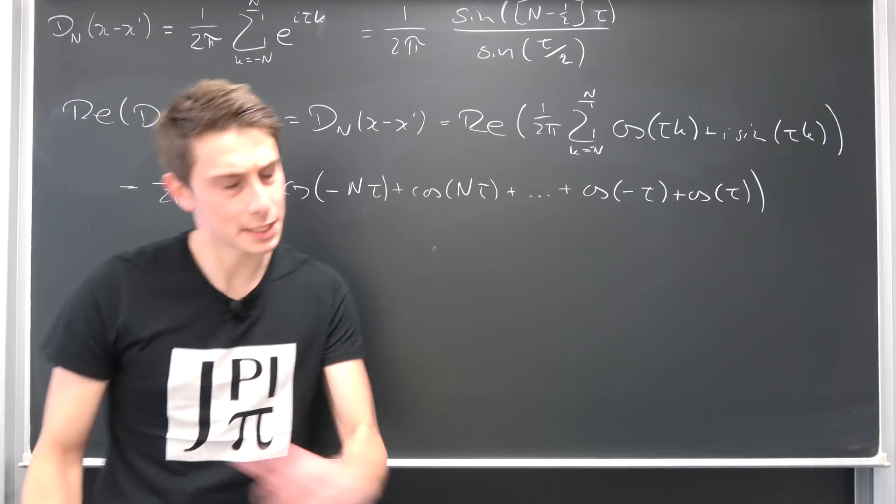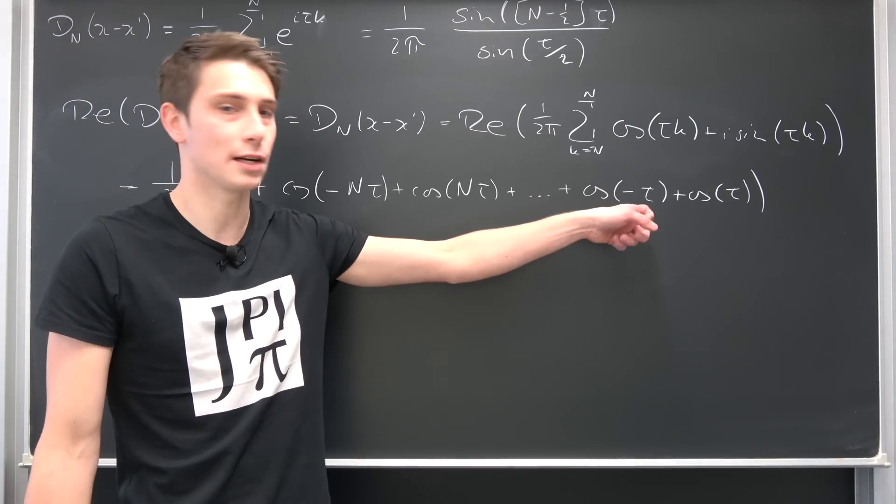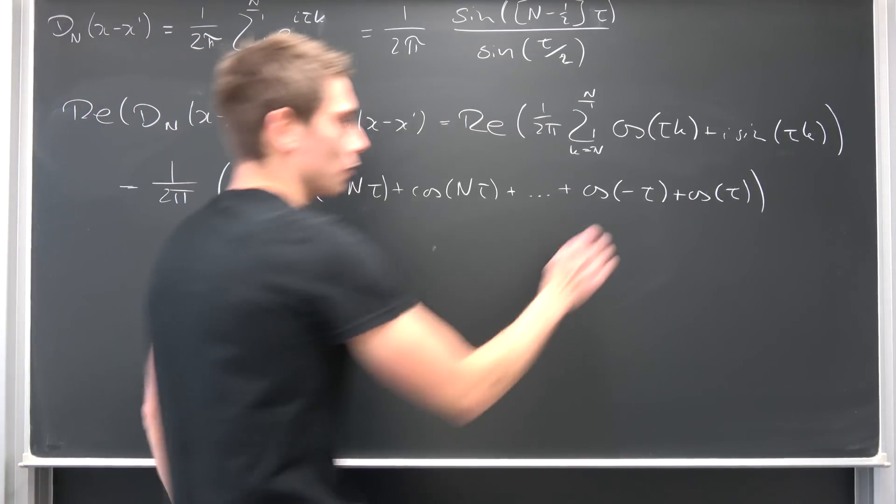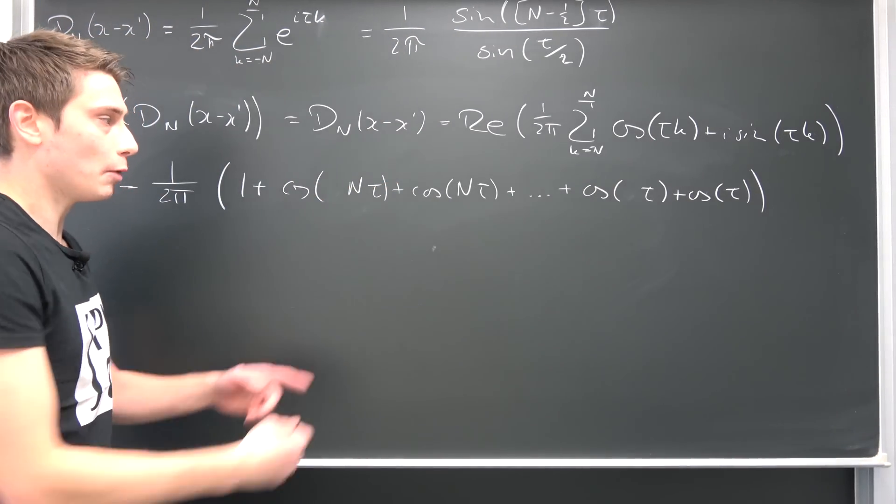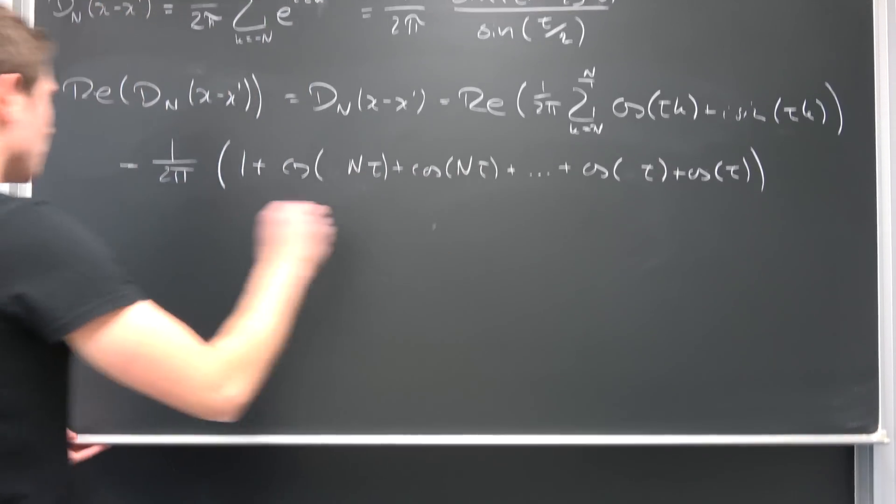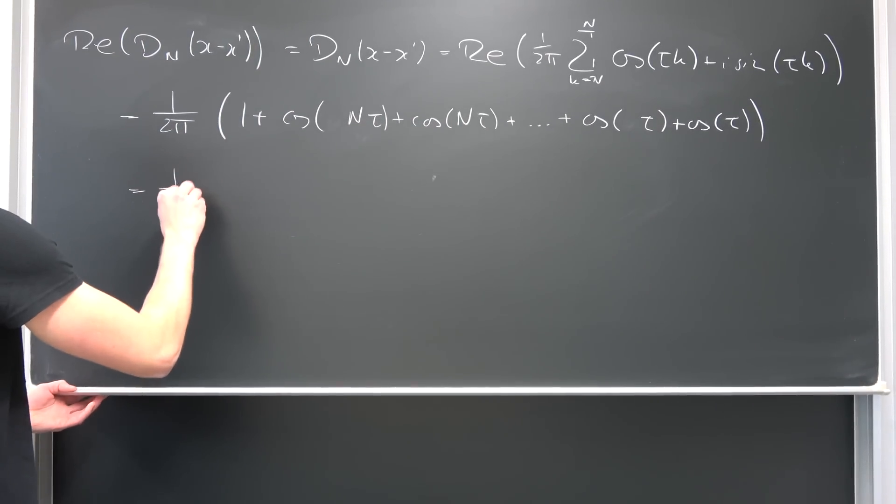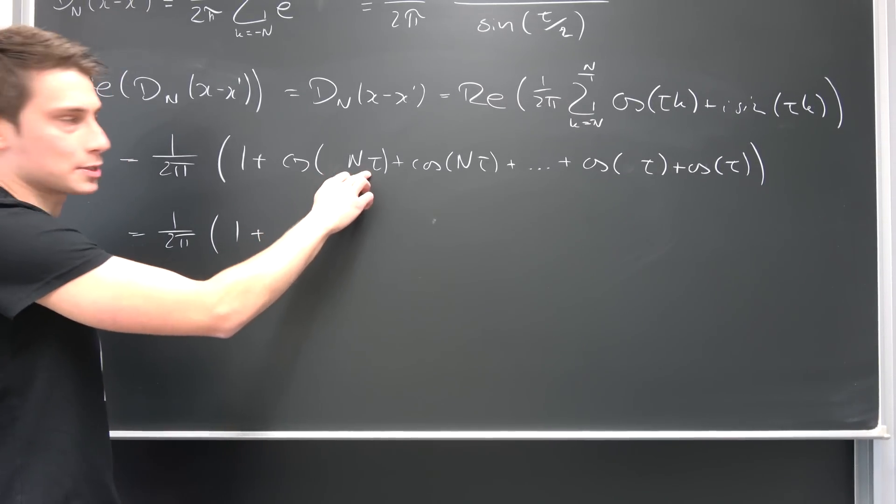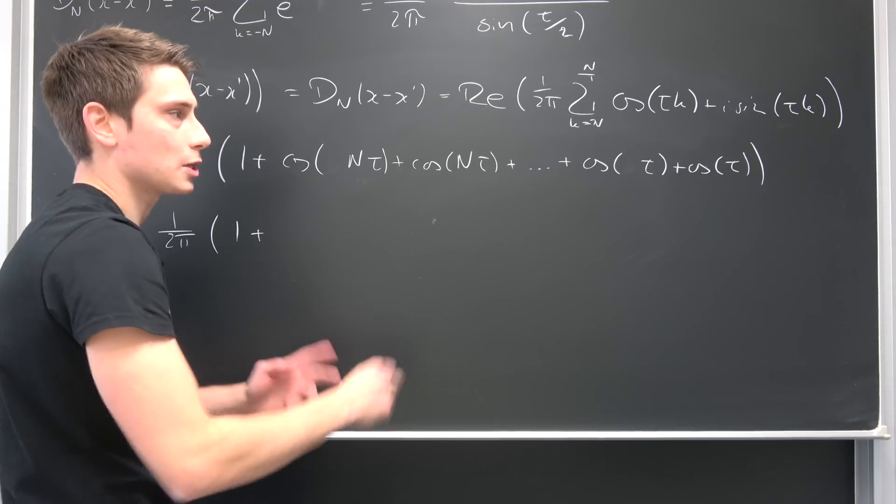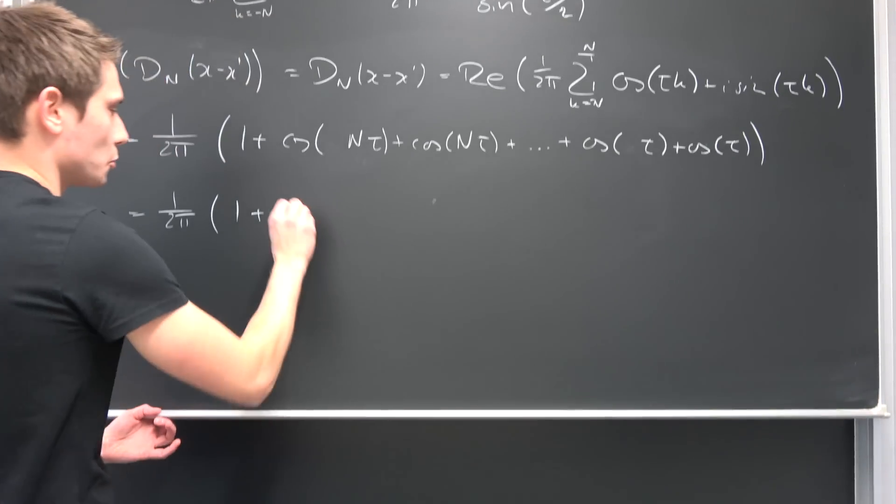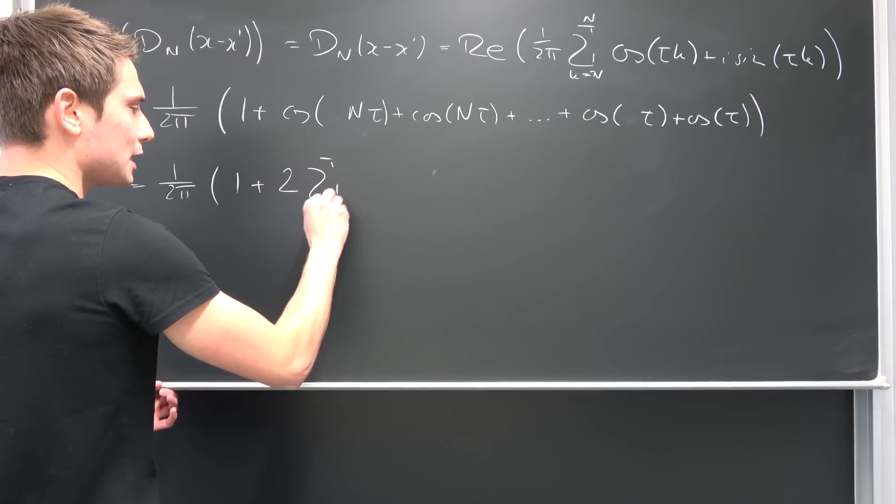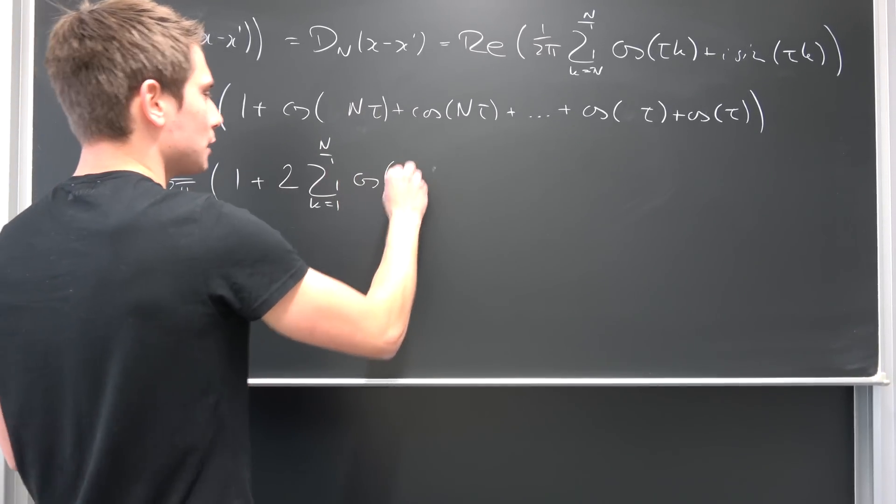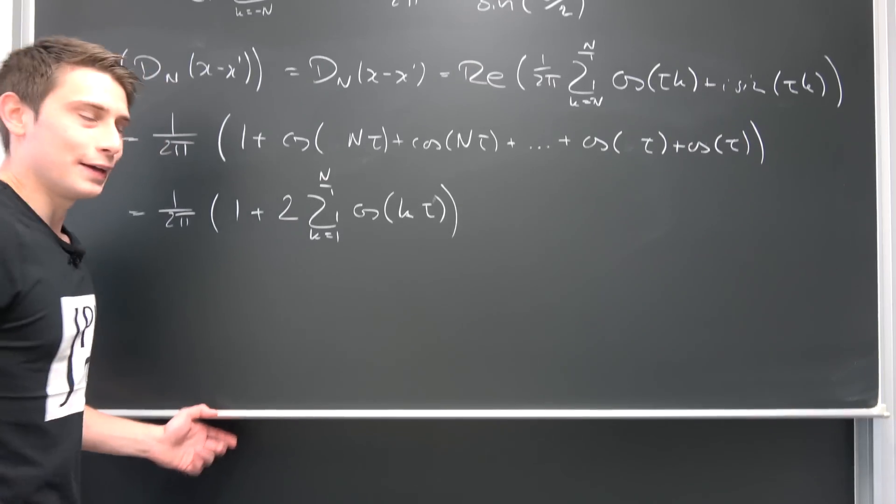And we already came pretty far because the cosine in itself is an even function, meaning the cosine of negative x is nothing but the cosine of x. So all those negative signs are going to vanish effectively. And you see, now we have 2 times those terms. So we can rewrite this as 1 over 2 times pi times 1 plus 2 times the summation from k equals 1 to capital N of cosine of k times tau. And then we are done.